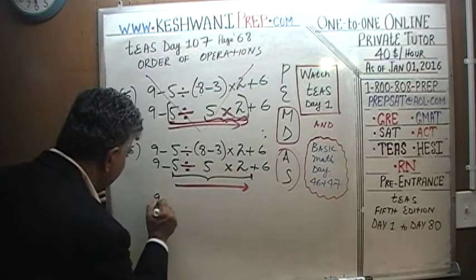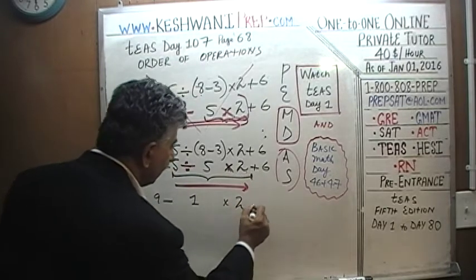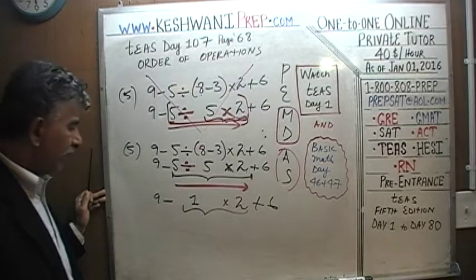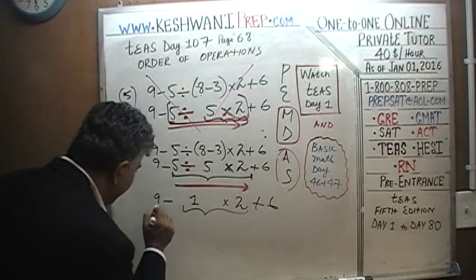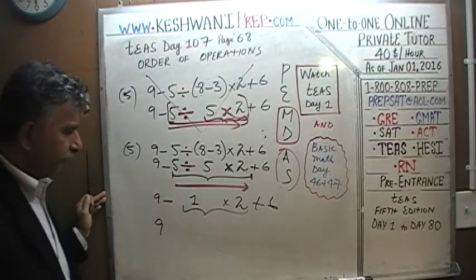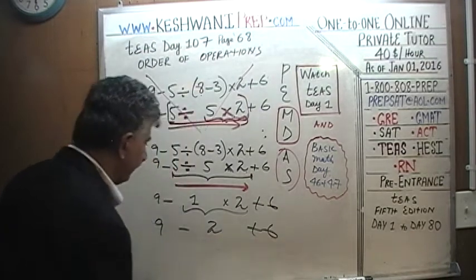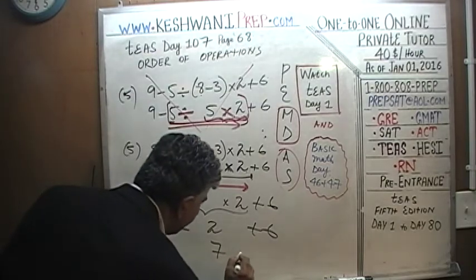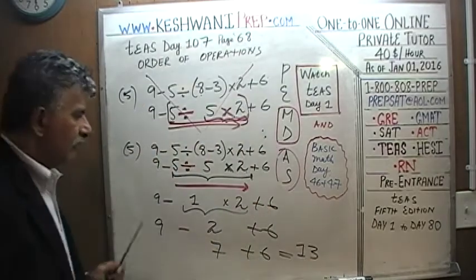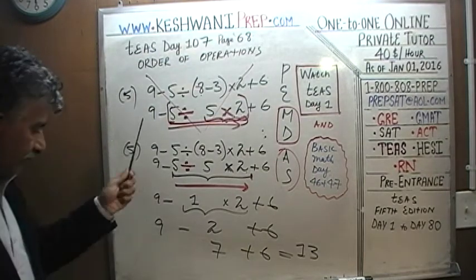Let's do it properly. After the parentheses, we have 9 minus 5 divided by 5 times 2 plus 6. Going left to right in the multiplication/division section: 5 divided by 5 is 1, then 1 times 2 is 2. So we have 9 minus 2 plus 6. Going left to right: 9 minus 2 is 7, and 7 plus 6 is 13. The correct answer is 13.